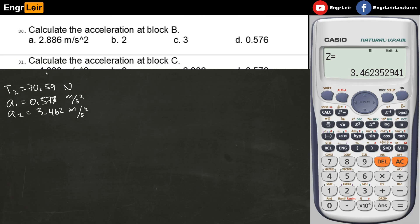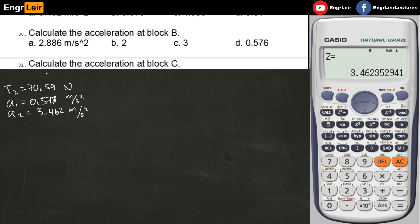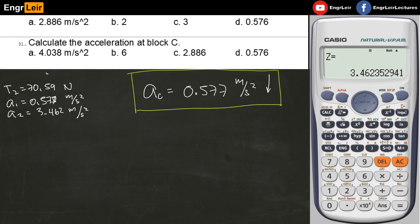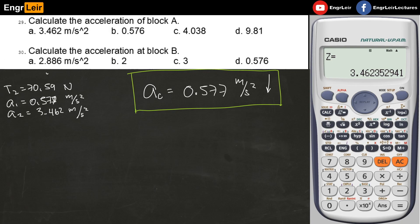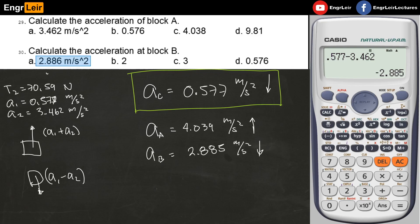Now for the acceleration of block A, block B, and block C. Block C's acceleration is simply A1, which is 0.577. This is the answer for number 31, letter D. For block A's acceleration, since A is accelerating upward at A1 + A2, add them together. The closest answer is letter C for block A. For block B, subtract them. Block B is accelerating at A1 - A2. The negative value means it's downward, which is letter A for block B's acceleration.